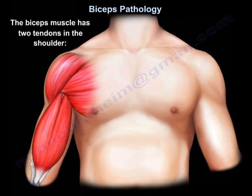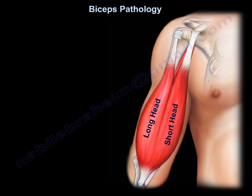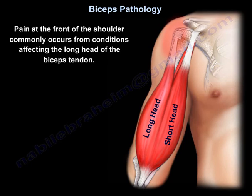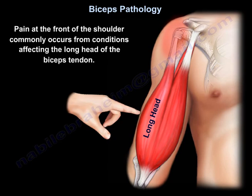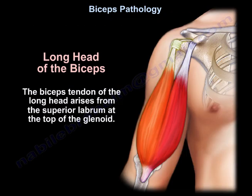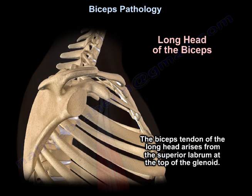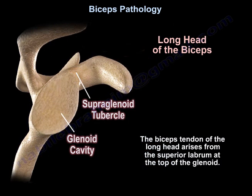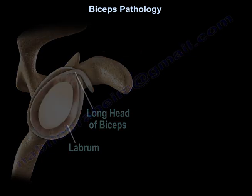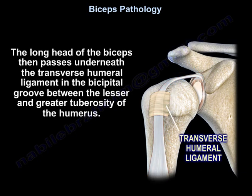Biceps Pathology. The biceps muscle has two tendons in the shoulder: the long head and the short head. Pain at the front of the shoulder commonly occurs from conditions affecting the long head of the biceps tendon. The biceps tendon of the long head arises from the superior labrum at the top of the glenoid. It passes underneath the transverse humeral ligament in a groove between the lesser and the greater tuberosity of the humerus.